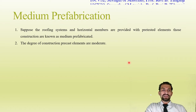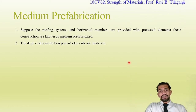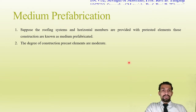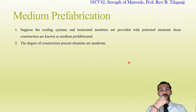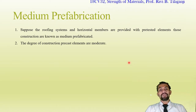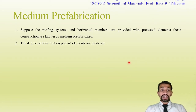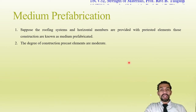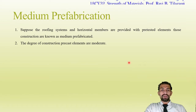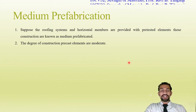Medium prefabrication: when roofing systems and horizontal members are provided with pre-tested elements, the construction is known as medium fabrication. Examples include reinforced concrete windows and reinforced concrete pillars used as grills — these are all prefabricated, brought to the site and installed as required.